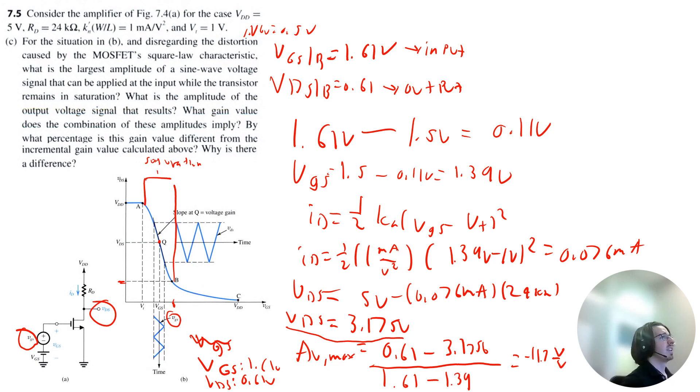And that magnitude is a little less than the incremental gain from part B. Part B was negative 12 volts per volt. So why is there any difference? This difference indicates that the transfer characteristic here is not a straight line. It says that this is just a linear approximation. And in fact, the actual curve is a lot more exponential than it's showing here on the graph.